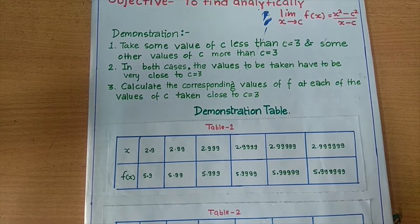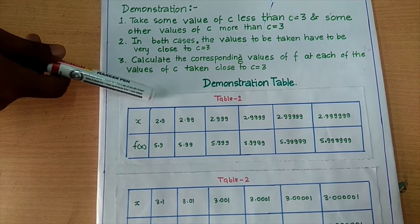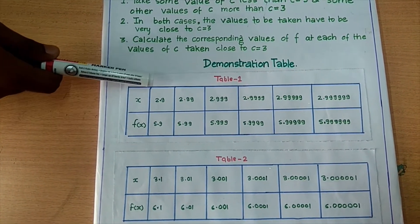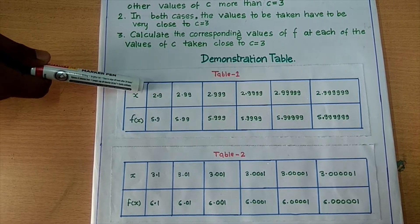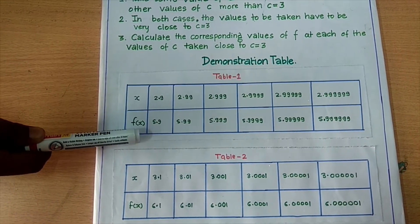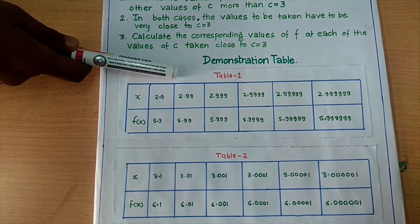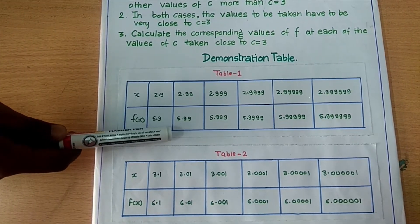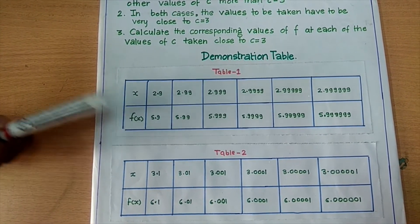First, we take some values less than 3 as shown in Table 1. If x equals 2.9, then f(x) is 5.9. If x equals 2.99, then f(x) is equal to 5.99, and so on.